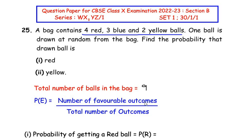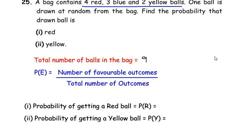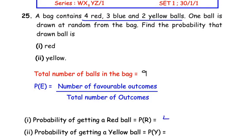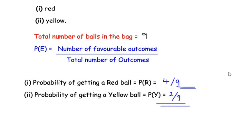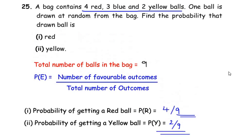For the probability of getting a red ball, the number of favorable outcomes is 4, so P(red) = 4/9. For the probability of getting a yellow ball, there are 2 yellow balls, so P(yellow) = 2/9. These are the two answers for this question. I hope you understood all the steps. If you liked the video, please like, share, and subscribe to my channel. Thank you for watching.